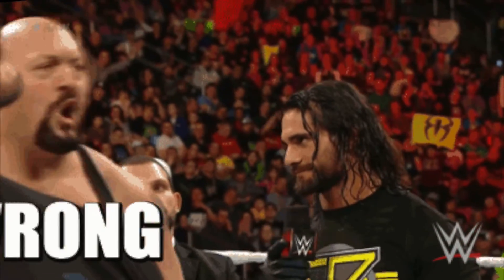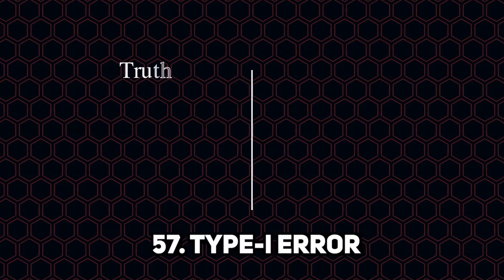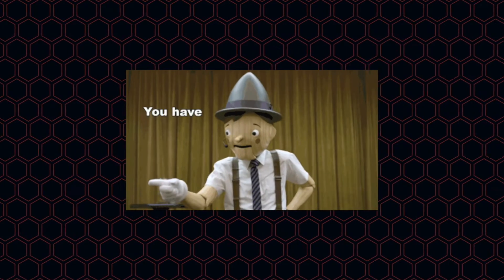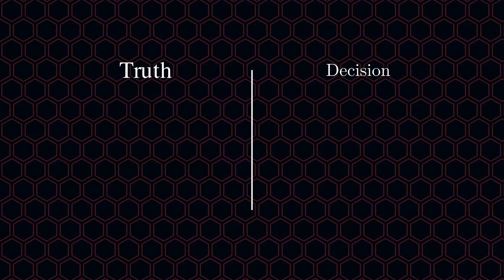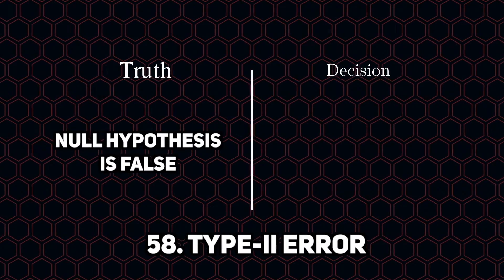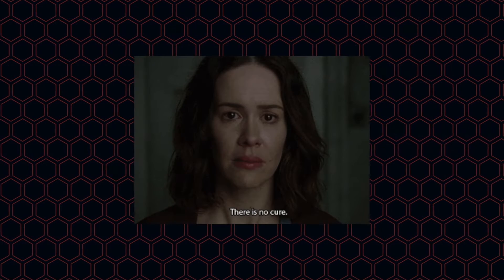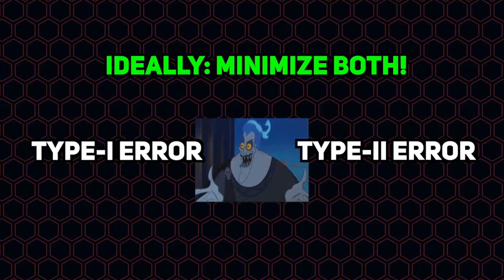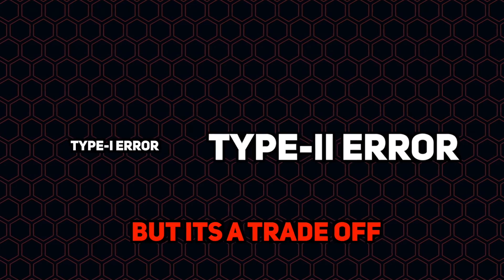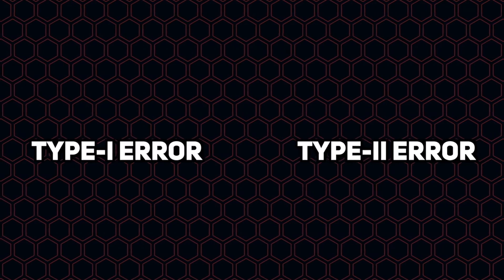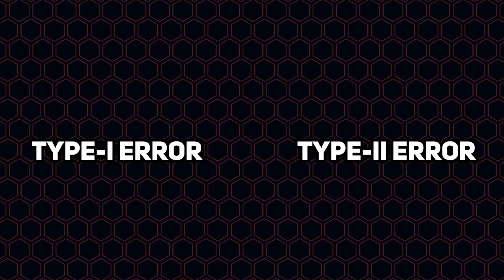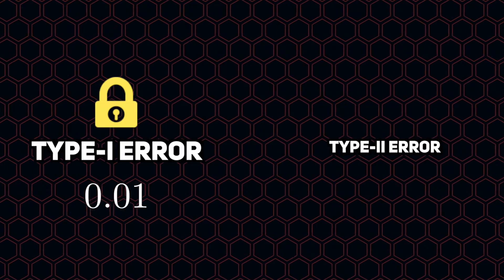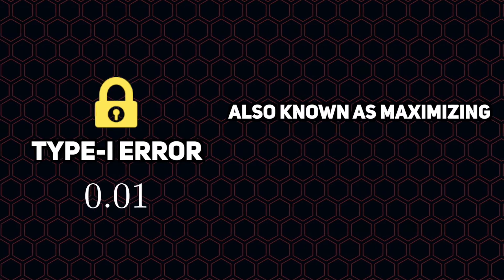After making a decision, there are two ways that we can be wrong. A type 1 error happens when the truth is that the null hypothesis is actually correct, but we decide to reject it — this is like saying the treatment works when it actually doesn't. A type 2 error happens when the null hypothesis is actually false, but we fail to reject it — this is like saying good medicine doesn't work. Ideally, we want to minimize the probability that both of these errors occur, but minimizing one increases the chances of another. Instead, we define a low enough probability that we can tolerate for a type 1 error, which we call the significance level. After setting this, we minimize the probability of a type 2 error, also known as maximizing power.